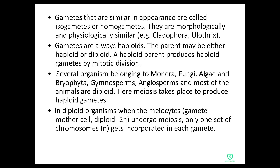A haploid parent produces haploid gametes by mitotic division. Several organisms — belonging to Monera, Fungi, Algae, Bryophyta, Gymnosperms, Angiosperms, and most animals — are diploid.